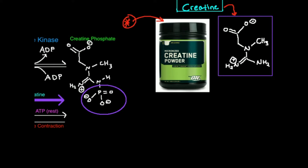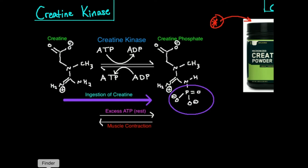We're going to go over the biochemical basis as to why that is, and the basis is this enzyme: creatine kinase. Before we go into the details, let me just tell you what creatine kinase does. Number one, it's a reversible reaction. The creatine I just showed you is right here — this molecule is creatine. We also need a molecule of ATP. Creatine kinase reversibly transfers one of the phosphates from ATP onto creatine, which makes creatine phosphate, or phosphocreatine.